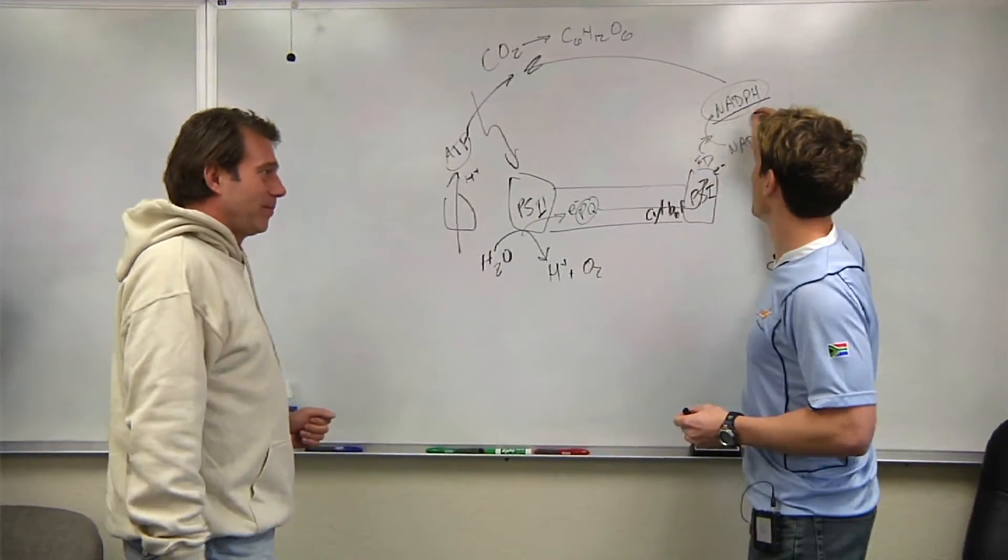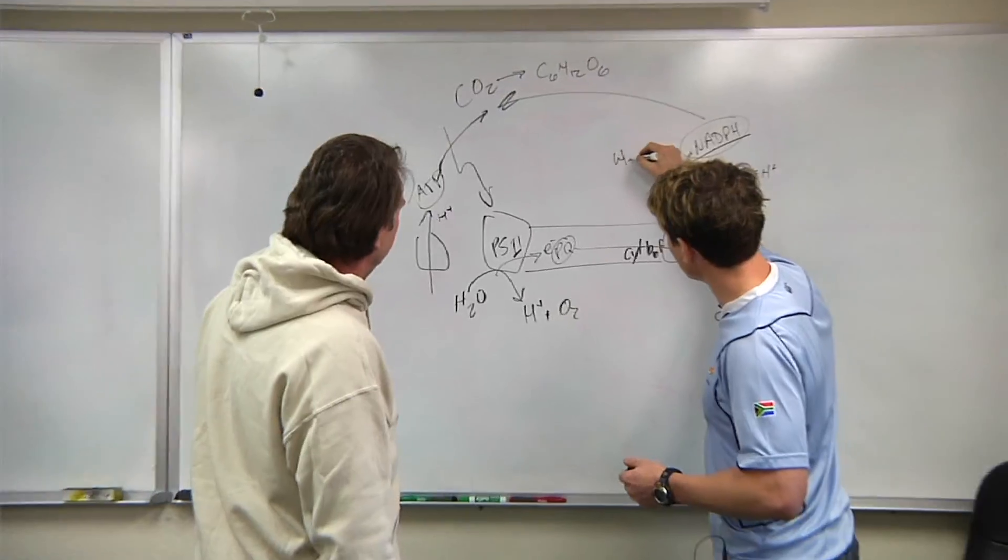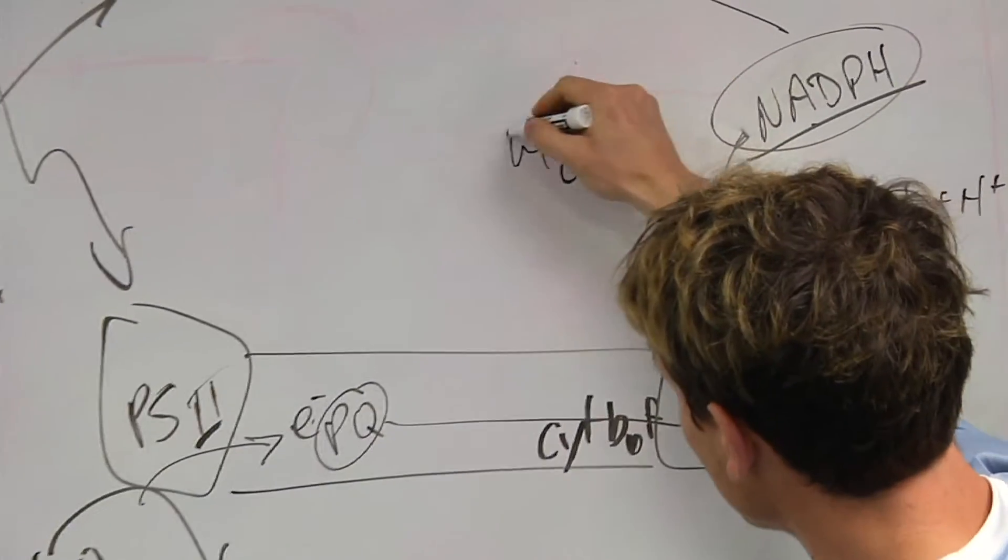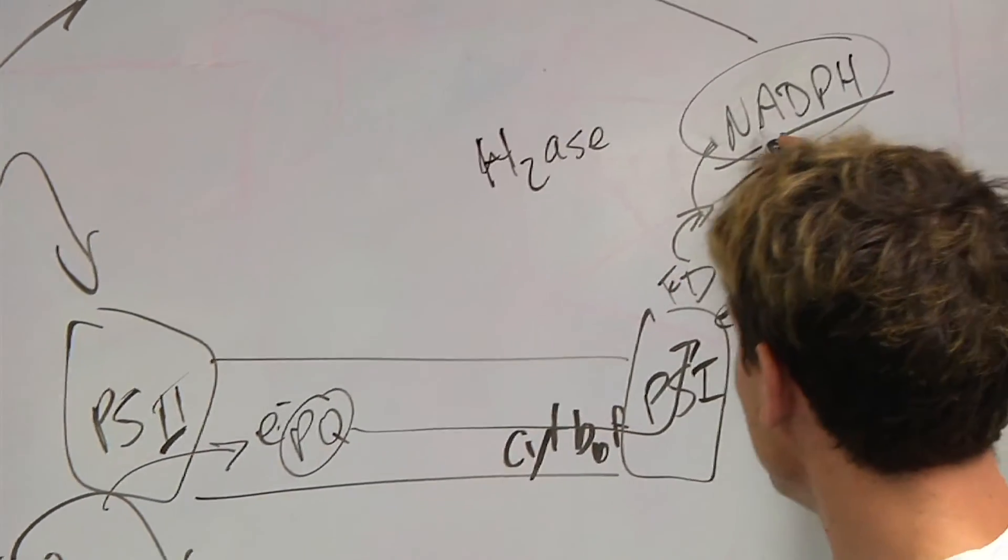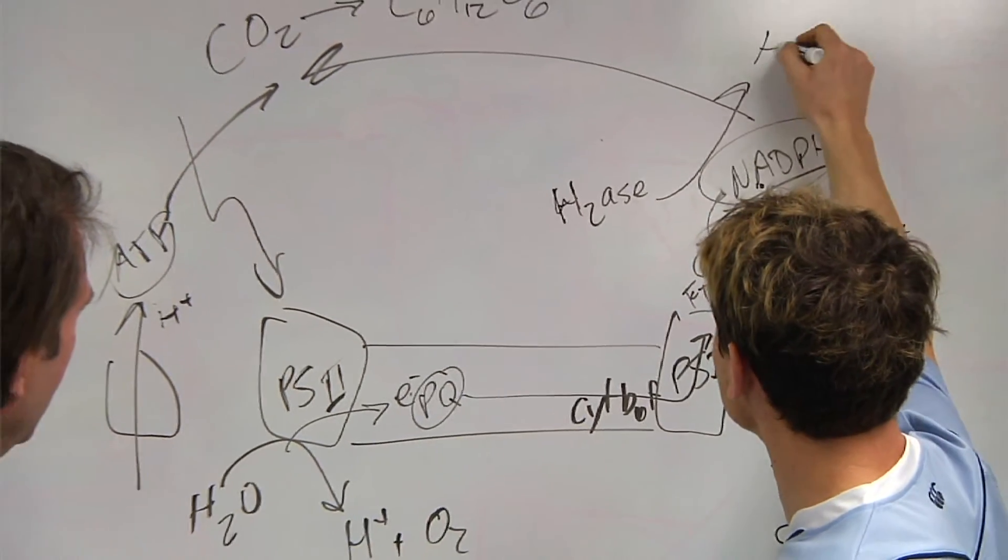What the cyanobacteria can do that plants can't do is they have another enzyme in here called a hydrogenase which can use NADPH to produce hydrogen directly.